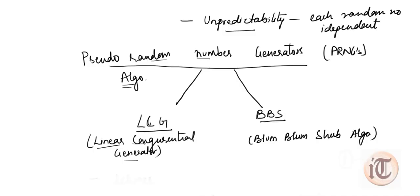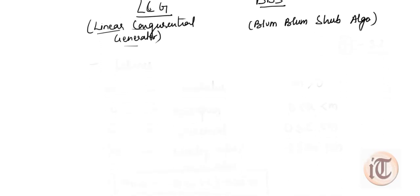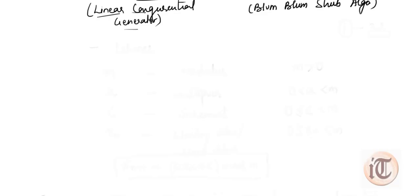In this video we are going to discuss the next algorithm, which is the BBS algorithm — that is, the Blum Blum Shub algorithm. We will discuss this algorithm with the help of an example. This is a very popular approach to generate secure pseudo random numbers, and it is named after its developers: Blum, Blum, and Shub. We will first discuss the algorithm and then take an example.